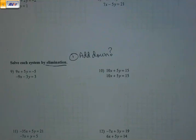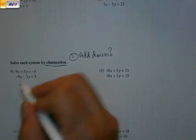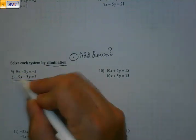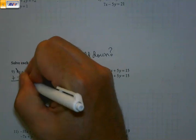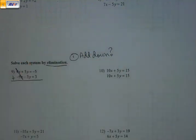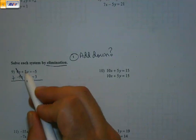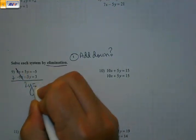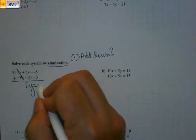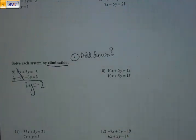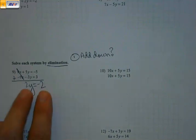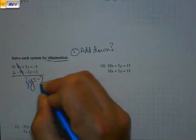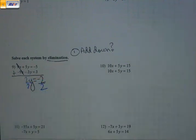So let's try number nine. I look at number nine, and if I start adding down, 9x plus negative 9x would cancel. That is as good as it gets. 5 plus negative 3 would be 2y, negative 5 plus 3 would be negative 2. And just like that, we've eliminated one variable, and we only have a one-step equation left.